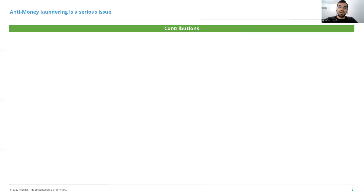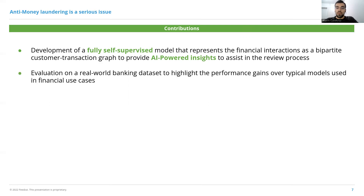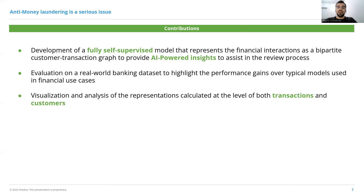Our main contributions are the development of a fully self-supervised model that represents the financial interactions as a bipartite directed and attributed customer transaction graph, leveraged to provide AI-powered insights that can assist the analyst in the review process. We evaluate this model on a real-world banking dataset and expose the performance gains over state-of-the-art models. Finally, we provide a visualization and analysis of embeddings calculated at the level of both transactions and customers, highlighting how these embeddings can be used to derive additional insights.